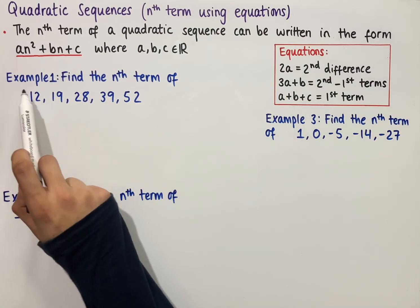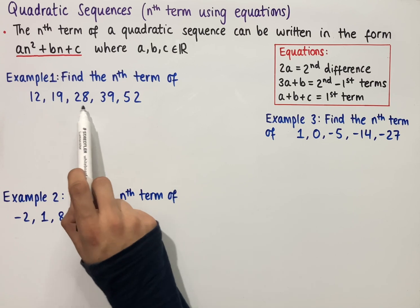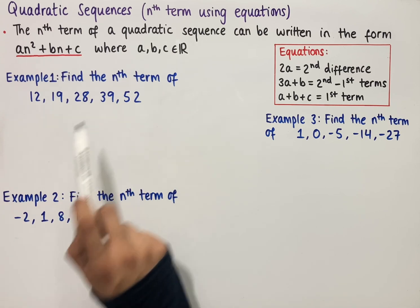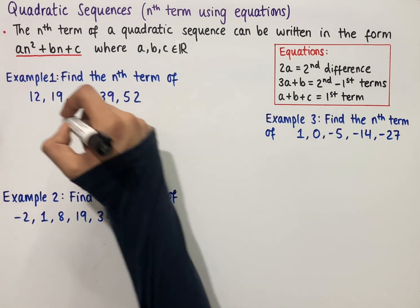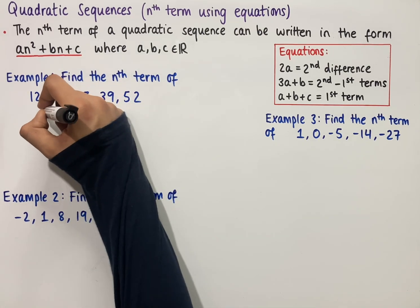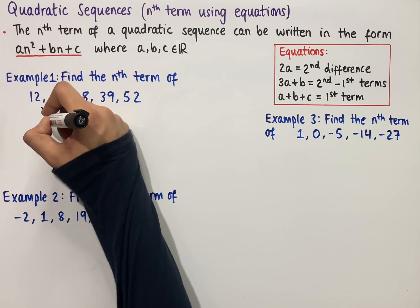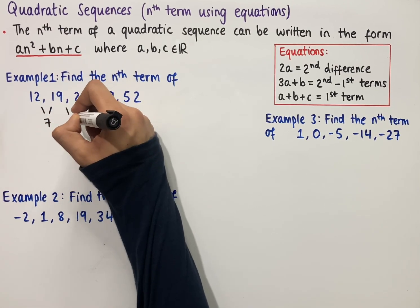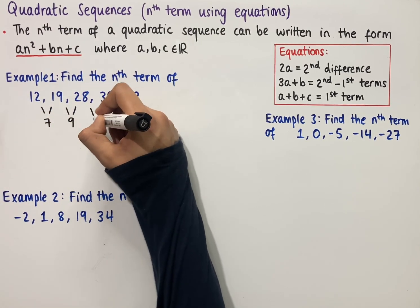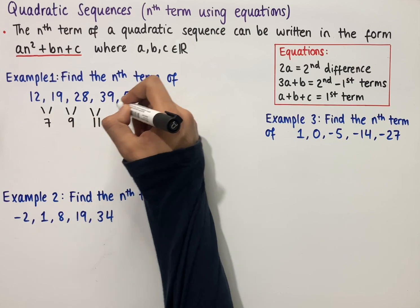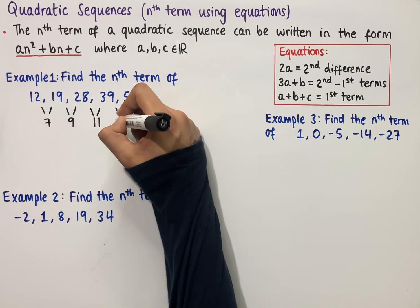The first example says find the nth term of the sequence 12, 19, 28, 39 and 52. First work out the first difference: 19 minus 12 which is 7, 28 minus 19 which is 9, 39 minus 28 which is 11, and 52 minus 39 which is 13.